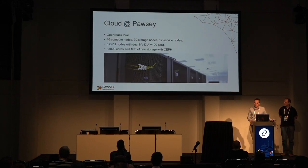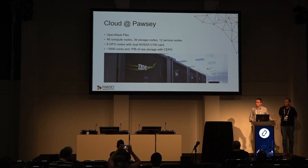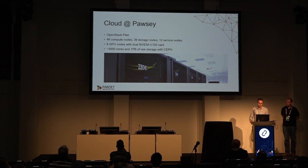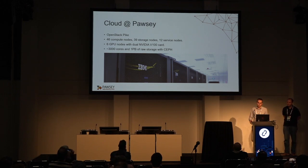Our cloud facility is called Nimbus. It's an OpenStack installation based on OpenStack Pike, with some nodes and services already in OpenStack Queens — Keystone and Cinder. We have 46 compute nodes, 39 storage nodes, and 12 service nodes. The new addition is six GPU servers with dual NVIDIA V100 GPU cards. In total, around 3,000 cores and one petabyte of raw storage with Ceph. The cluster runs Ubuntu 16 and uses Puppet and MAAS for bare-metal provisioning. We are a small team of three people: me, Jeremy, and Gregory.